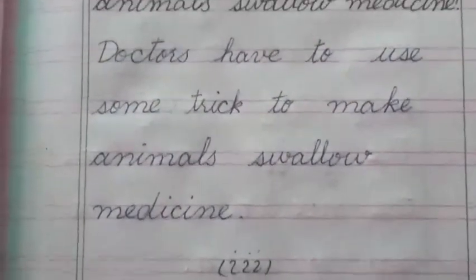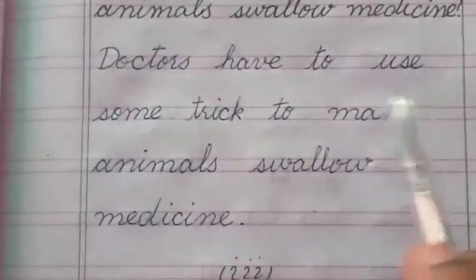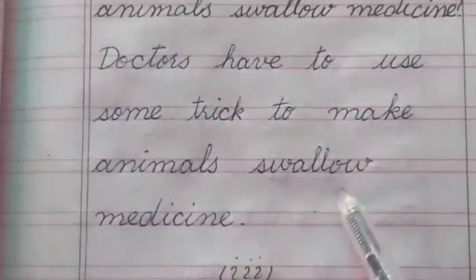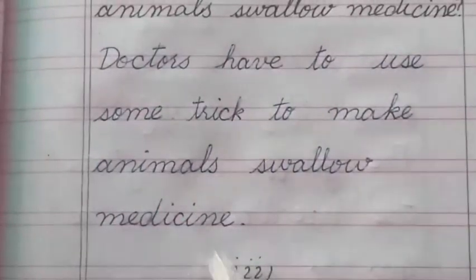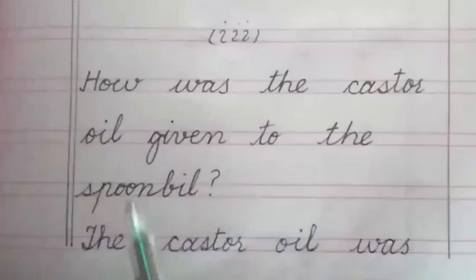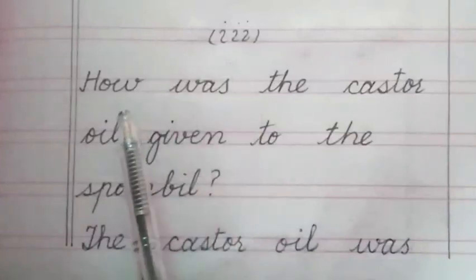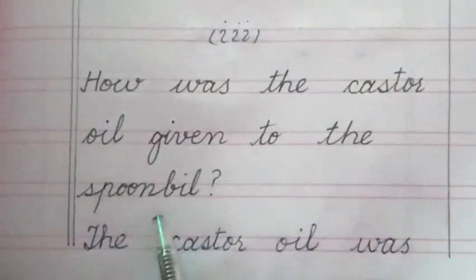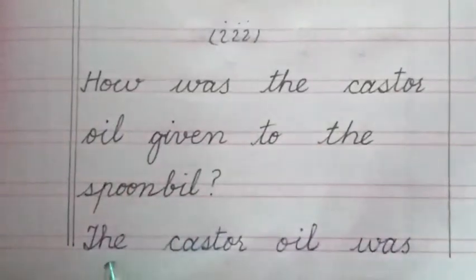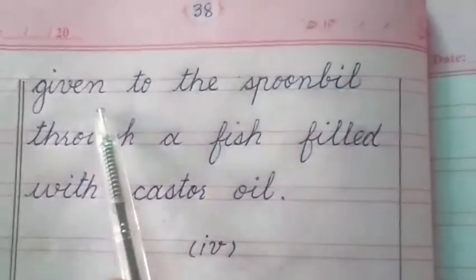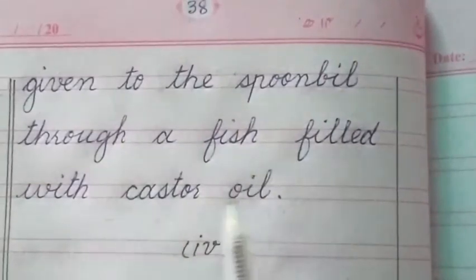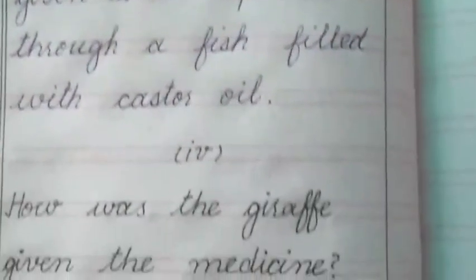Question number two: How do doctors make animals swallow medicines? Answer: Doctors have to use some trick to make animals swallow medicine. Question number three: How was the castor oil given to the spoonbill? Answer: The castor oil was given to the spoonbill through a fish filled with castor oil.